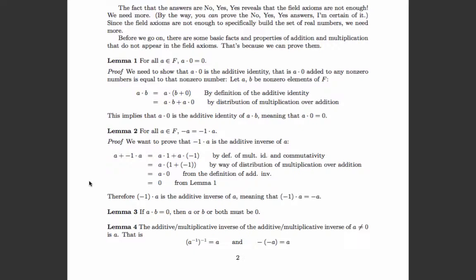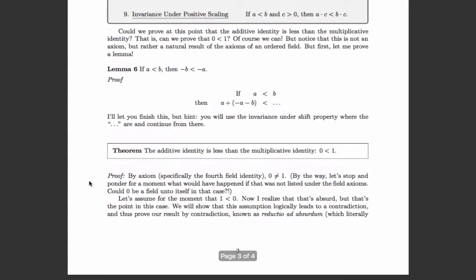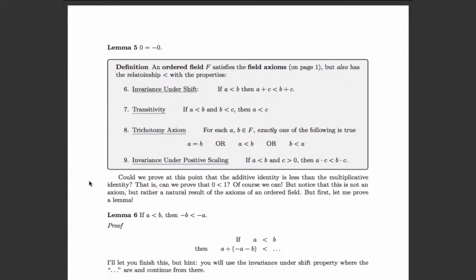Lemma 3: if a times b equals zero, then either a is zero, b is zero, or both are zero. I'll let you prove that one yourself. Lemma 4: the additive or multiplicative inverse of the inverse of a (where a is not zero) is a itself — in other words, the reciprocal of the reciprocal of a is a, and the negative of the negative of a is a. That follows straightforwardly from the definitions of the multiplicative and additive inverses.